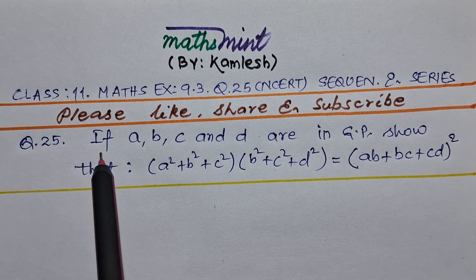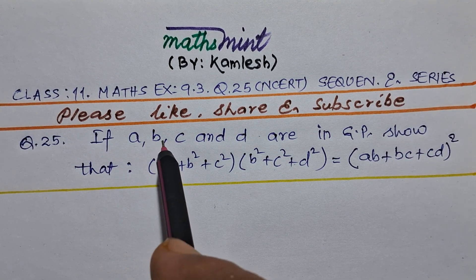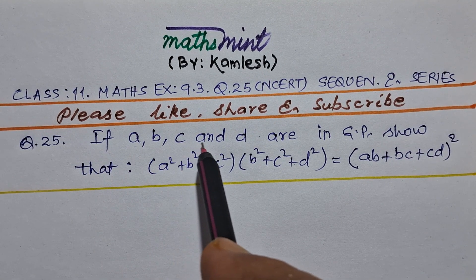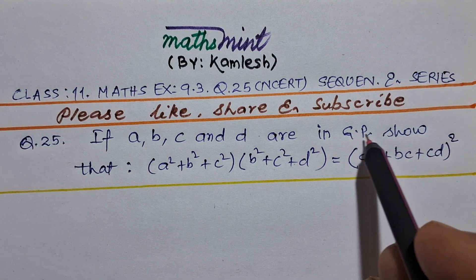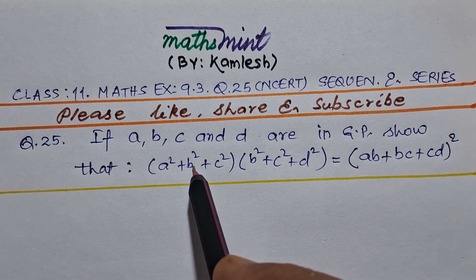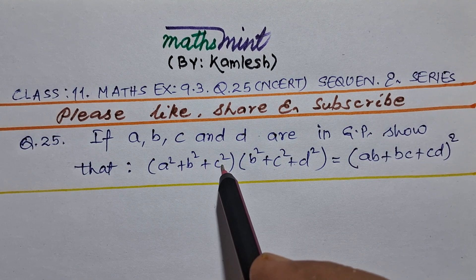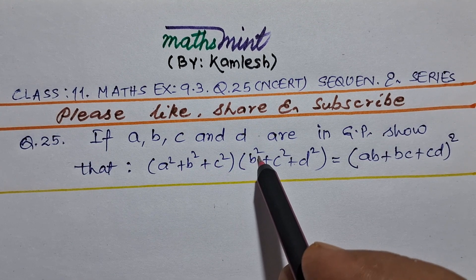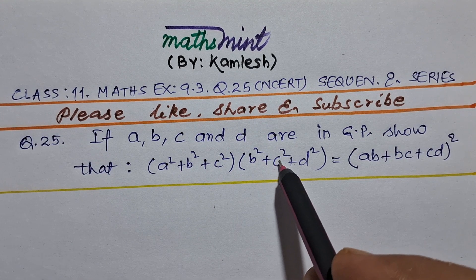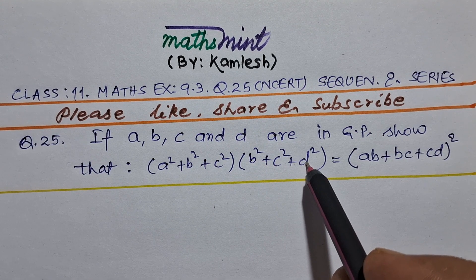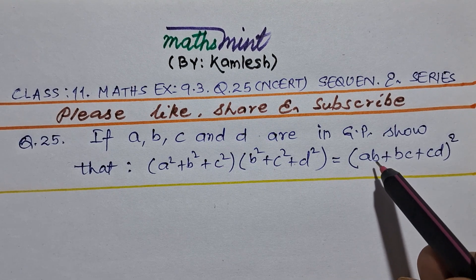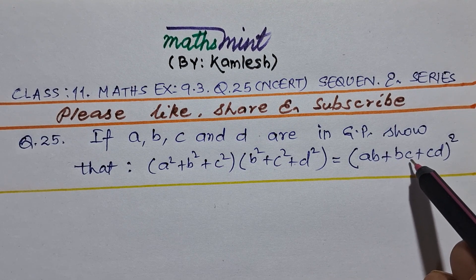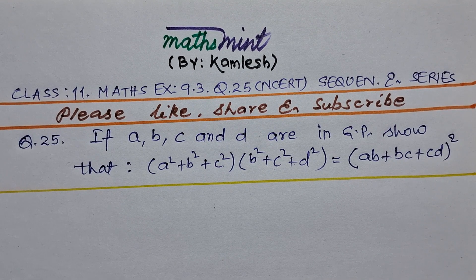In the question it is given: if A, B, C and D are in GP, then A square plus B square plus C square, into B square plus C square plus D square, will be equal to AB plus BC plus CD, whole square.